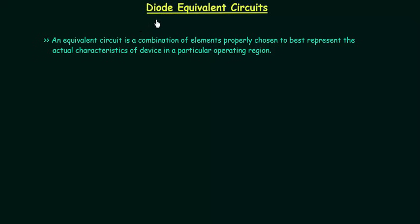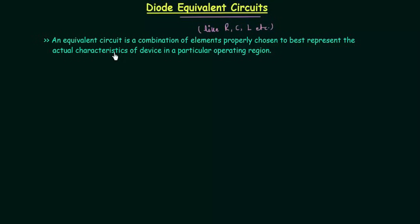In this lecture I will explain diode equivalent circuits, but first we will try to understand what is an equivalent circuit. An equivalent circuit is a combination of elements like resistor, capacitor, inductor, etc., properly chosen to best represent the actual characteristics of a device in a particular operating region.